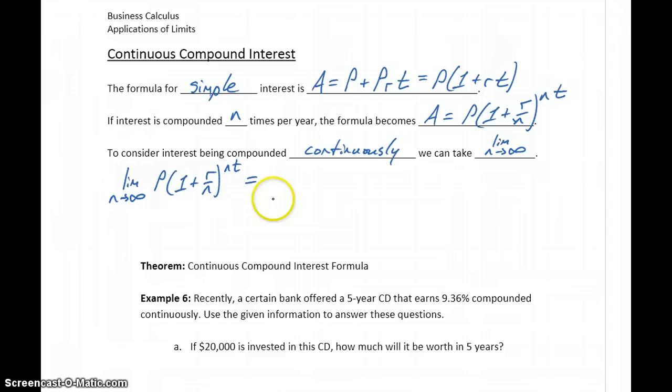Our value P is a constant, so we can pull that out in front of this limit notation. And then what we're going to do is multiply this original exponent by R over R. So multiplying by R over R is the same thing as multiplying by 1, so we're not actually changing our expression at all. So now we have P times the limit as n approaches infinity of 1 plus R over n. And now just rewriting this, rearranging some of our multiplication, we can rewrite this as n over R times Rt.